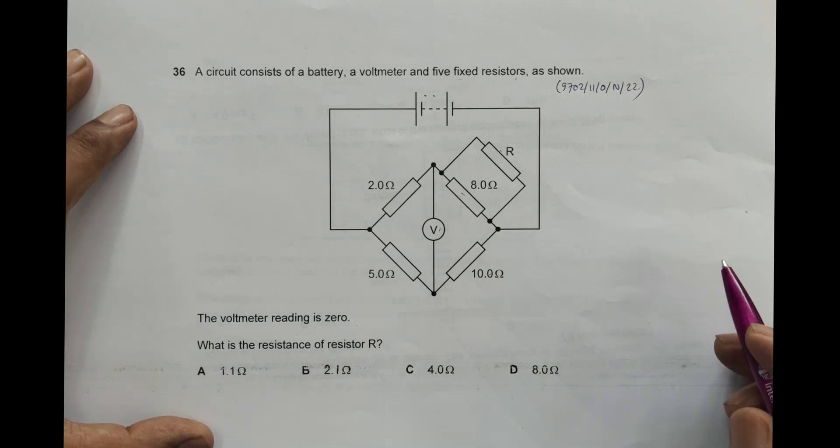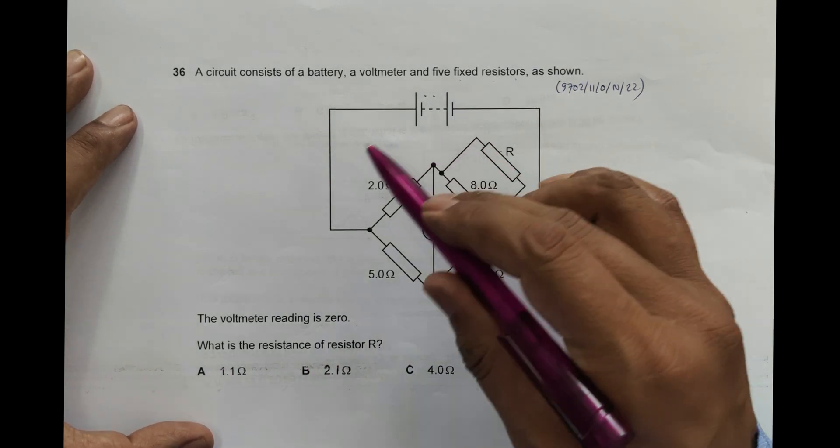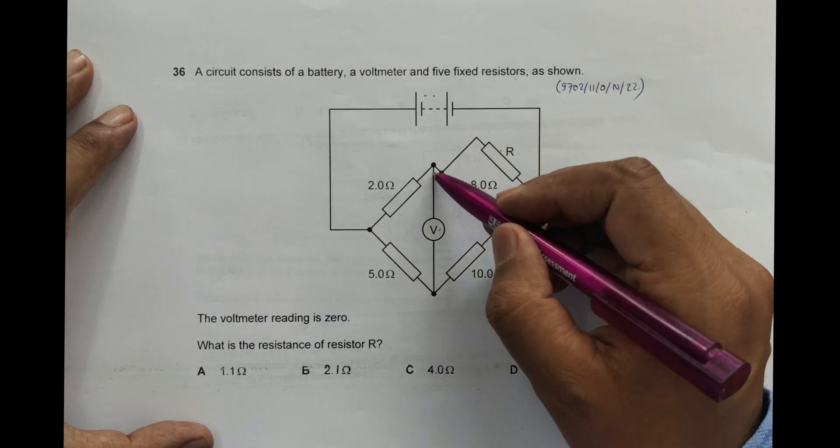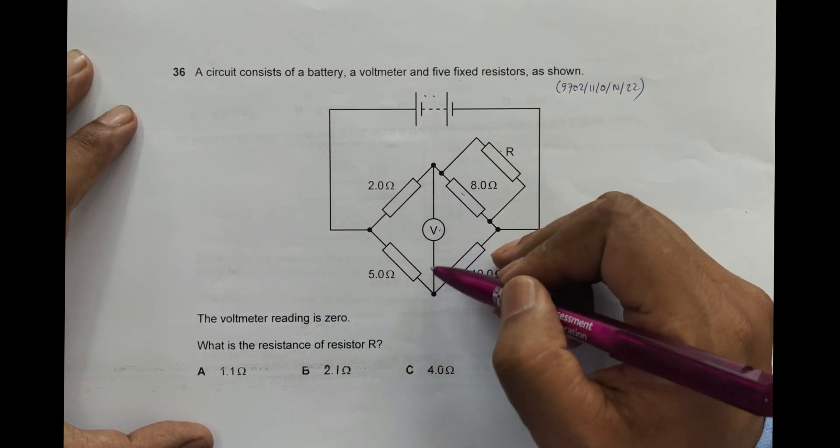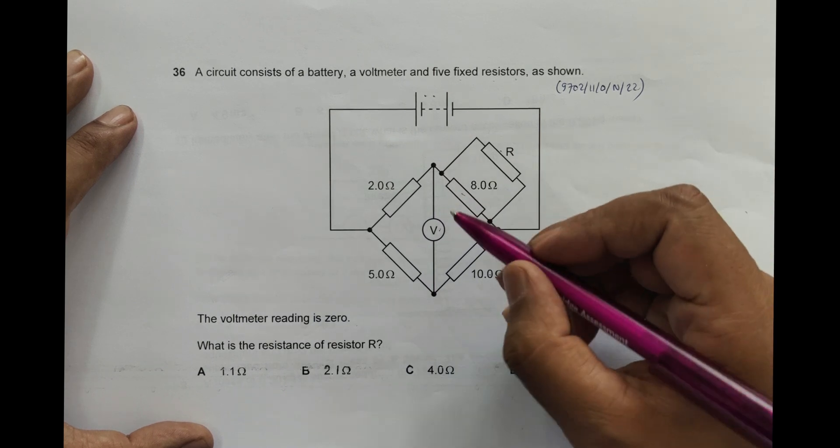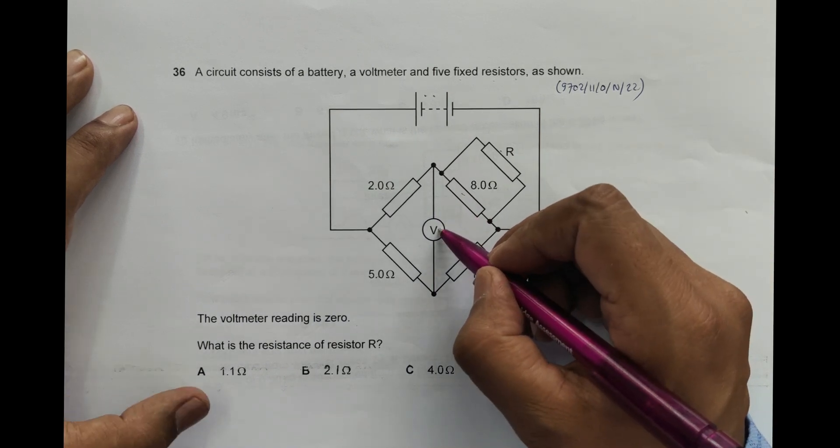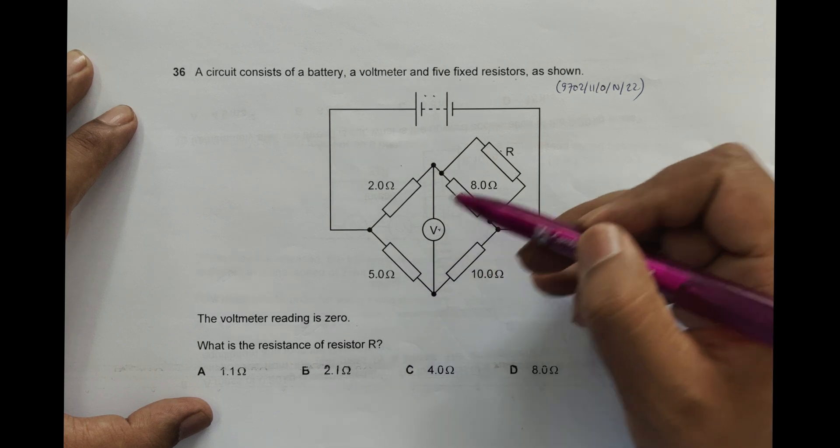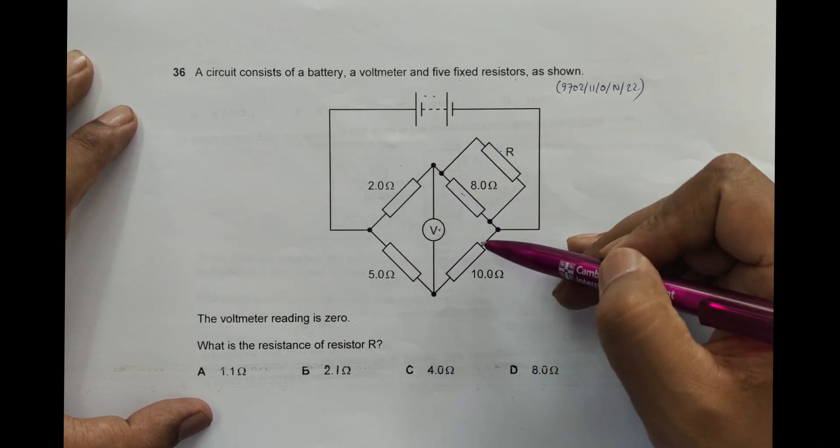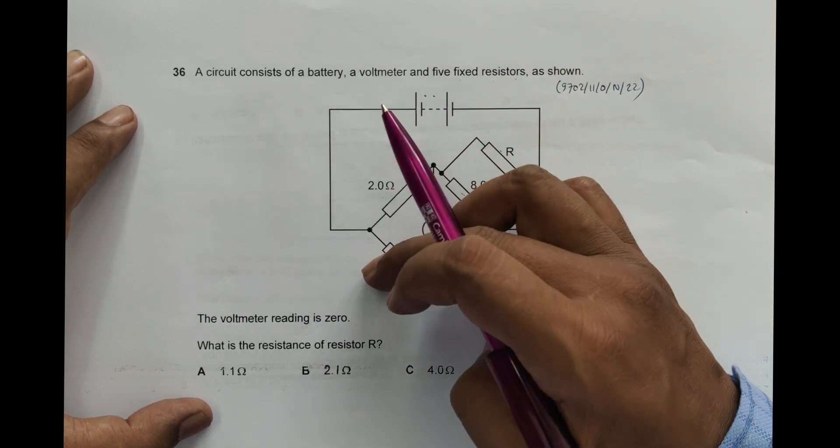This is a typical arrangement of the Wheatstone bridge where this is the bridge circuit, the bridge between two paths. So if we have V equal to zero, then what I must have is this ratio should be equal to this ratio. The ratio of this and this should be equal to the ratio of this and this.